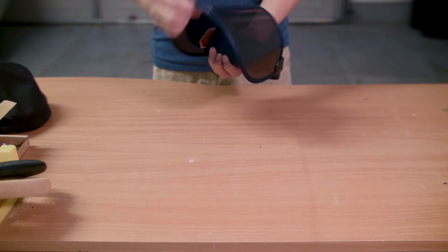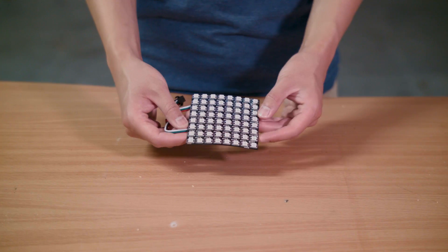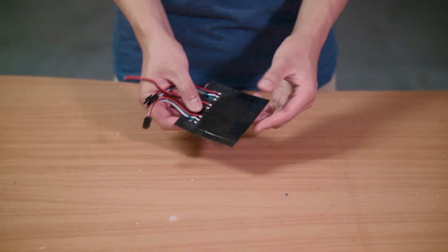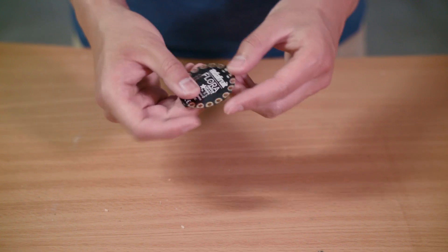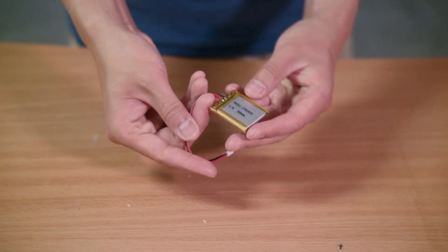Next we'll need a full face sun visor. For the display, we'll use this 8x8 flexible LED matrix. It has just enough flexibility to match the contour of our hat. We're also going to use this wearable electronics platform to control the display, and of course, the battery to power it all.